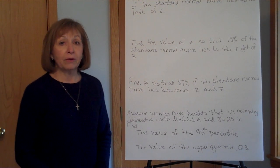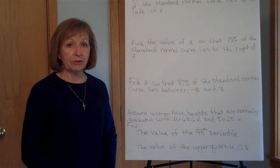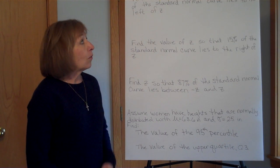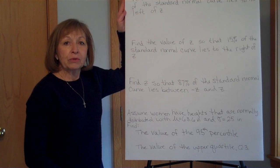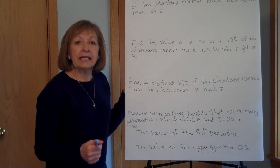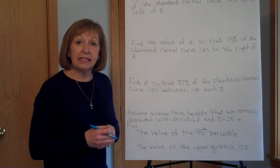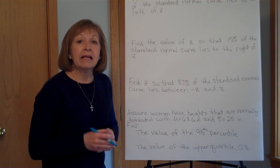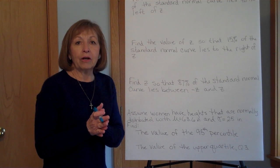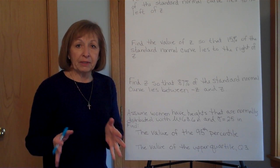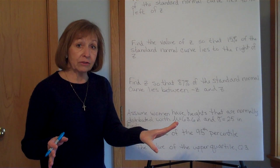In a previous video, we found probability of a normal distribution. Now, when we're looking at those types of problems, we were looking at using our normal CDF to find the probability that the values are lower than a z-score, between two z-scores, or higher than a z-score.